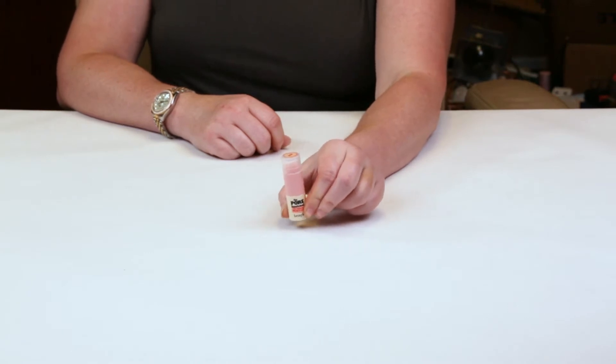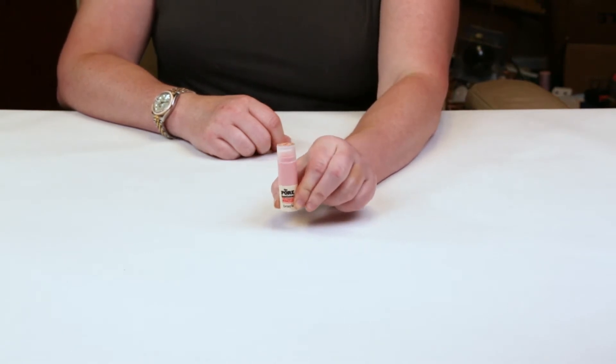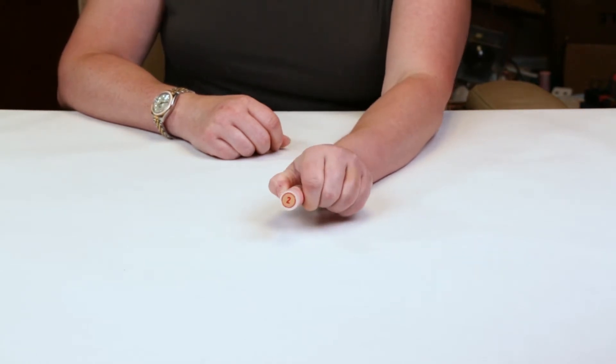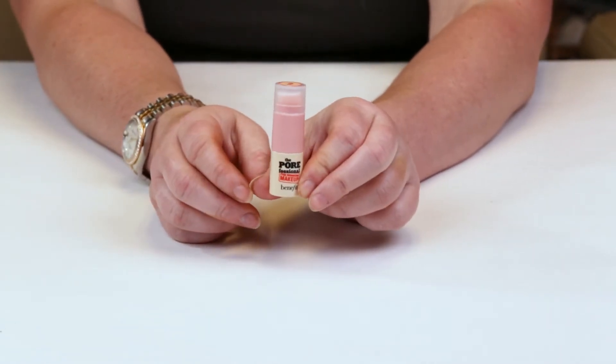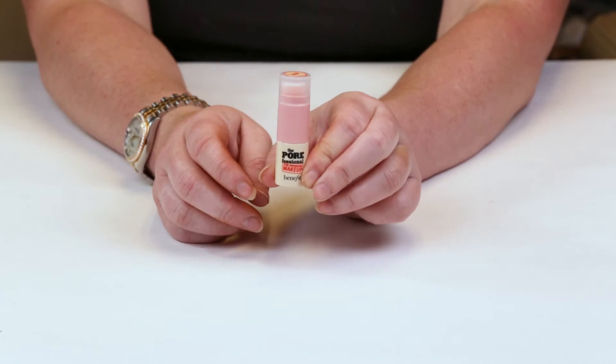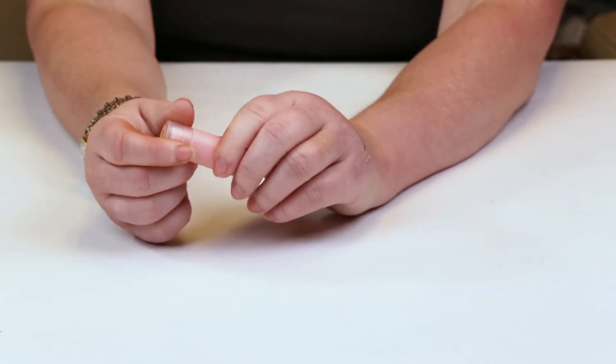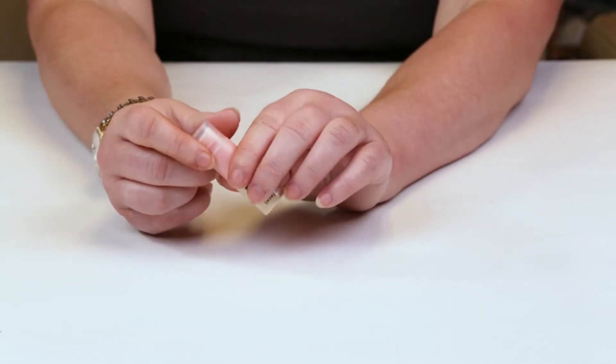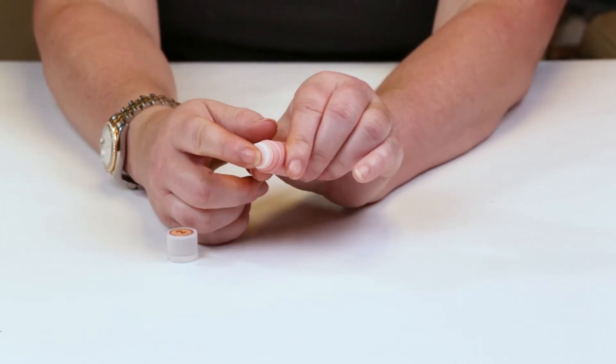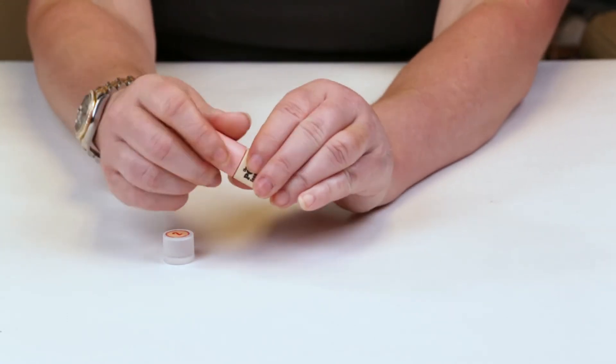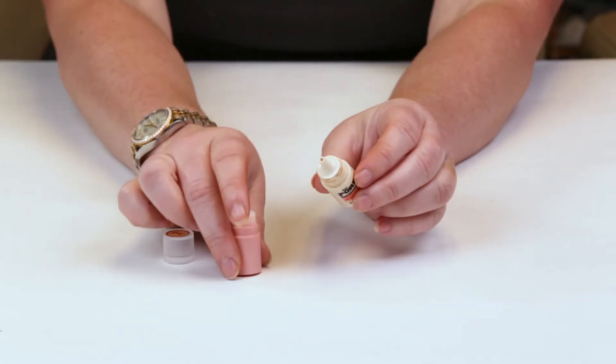This is meant to be almost a primer and foundation combined into one. There's five shades. I have shade number two, and this is a sample product that I got. The full size is $30 and is half an ounce. So this is just a little sample I got, but the full size looks almost identical, just larger. It's got a cap with a sponge on one end, and then you unscrew this and you've got the makeup.